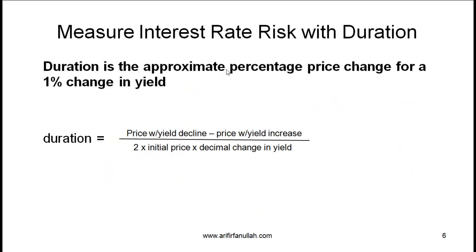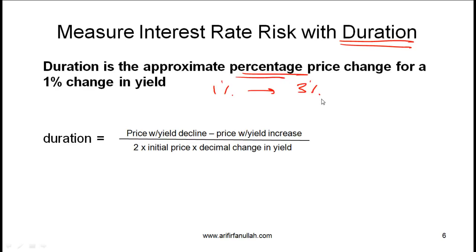How do we measure interest rate risk? We use a measure called duration, covered in more detail in a later reading. Duration is the approximate percentage price change for a 1% change in yield. For example, if a 1% change in yield leads to a 3% decrease in price, then the duration is 3. Sometimes it's written as a negative number to highlight that a 1% increase in yield causes a 3% decrease in price. This is an approximate measure.